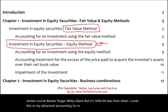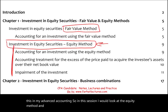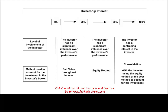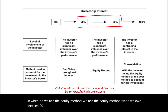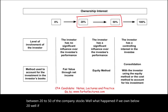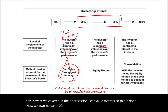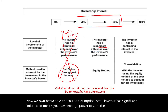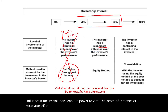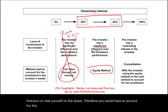In this session, I'll look at the equity method. So when do we use the equity method? We use the equity method when we own between 20% to 50% of a company's stocks. If we own below 20%, we use the fair value method, which was covered in the prior session. When we own between 20% to 50%, the assumption is the investor has significant influence — enough power to vote on the board of directors.